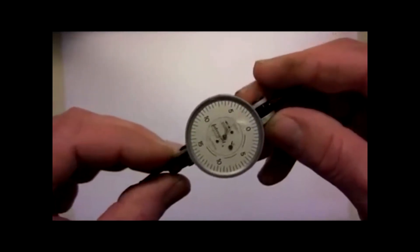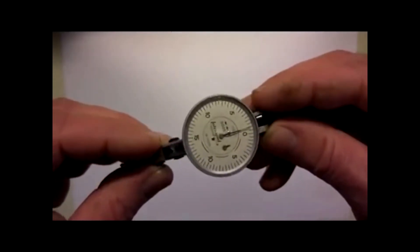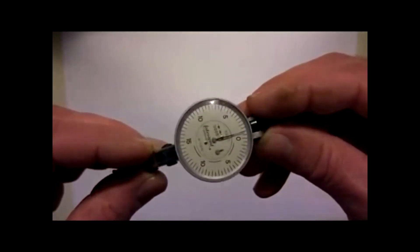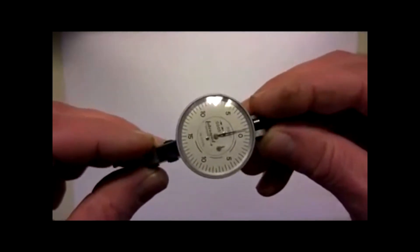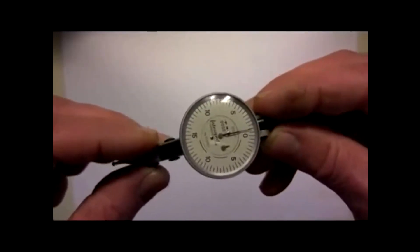This is an Interrapid indicator, and as you may or may not know, an indicator is one of the gold standards of measurement in the tool room. Along with a set of gauge blocks, this is the industry standard, and there's a lot of different indicators you can purchase, but the reason I love the Interrapid is for a few reasons.